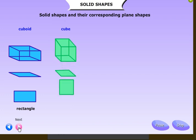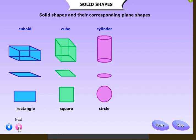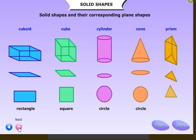The plane shape of cube is square. The plane shape of cylinder is circle. The plane shape of cone is circle. The plane shape of prism is triangle.